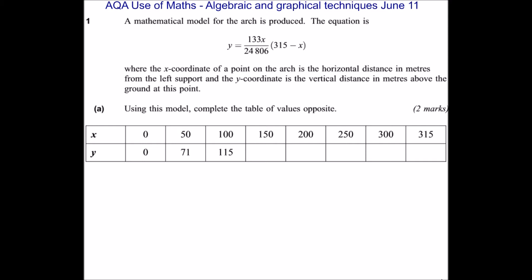The first question starts off with quadratics. Question 1, a mathematical model for the arches produced. The equation is y equals 133x divided by 24,806 times 315 minus x, where the x-coordinate of the point on the arch is the horizontal distance in metres from the left support, and the y-coordinate is the vertical distance in metres above the ground at this point. Using this model, complete the table of values opposite.